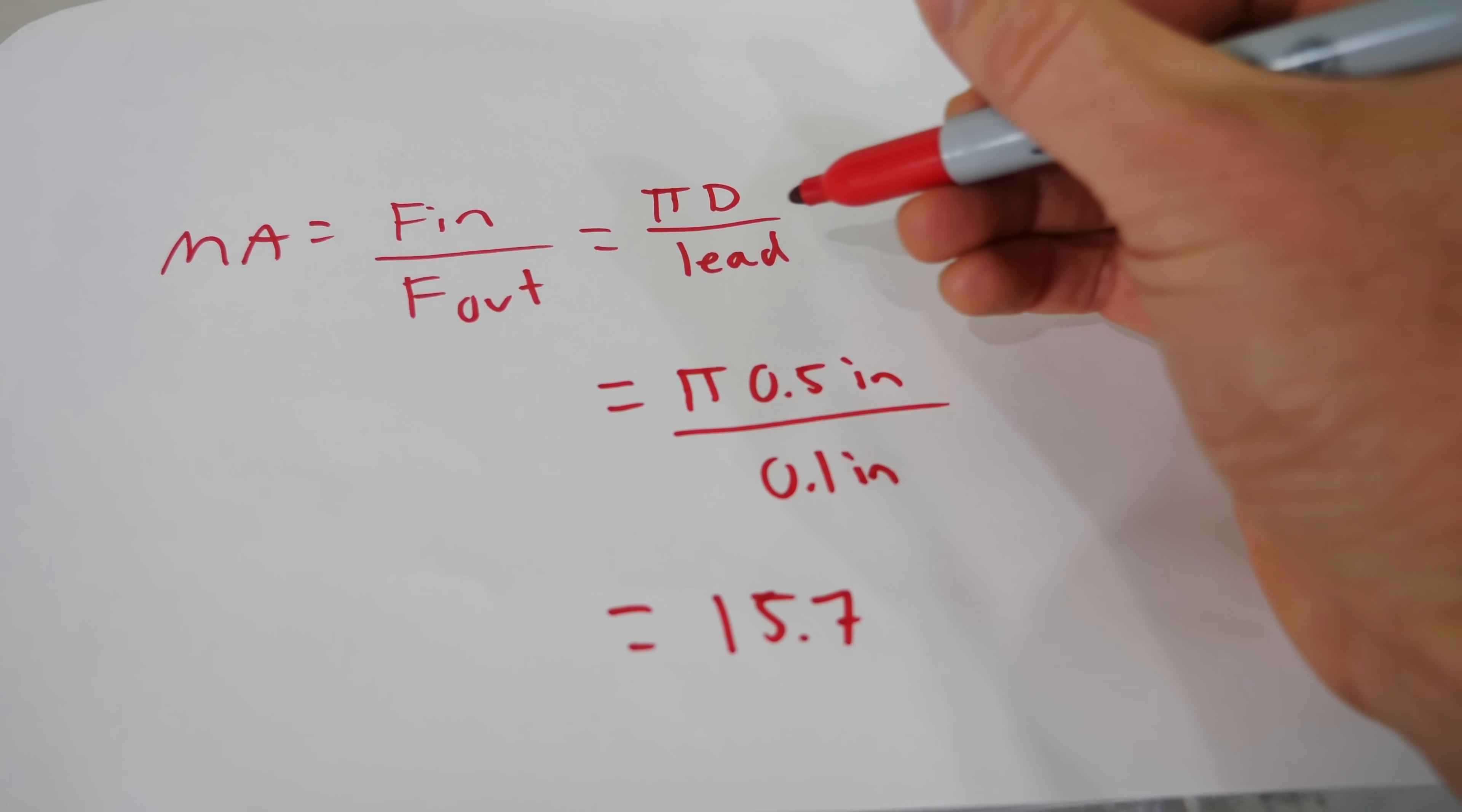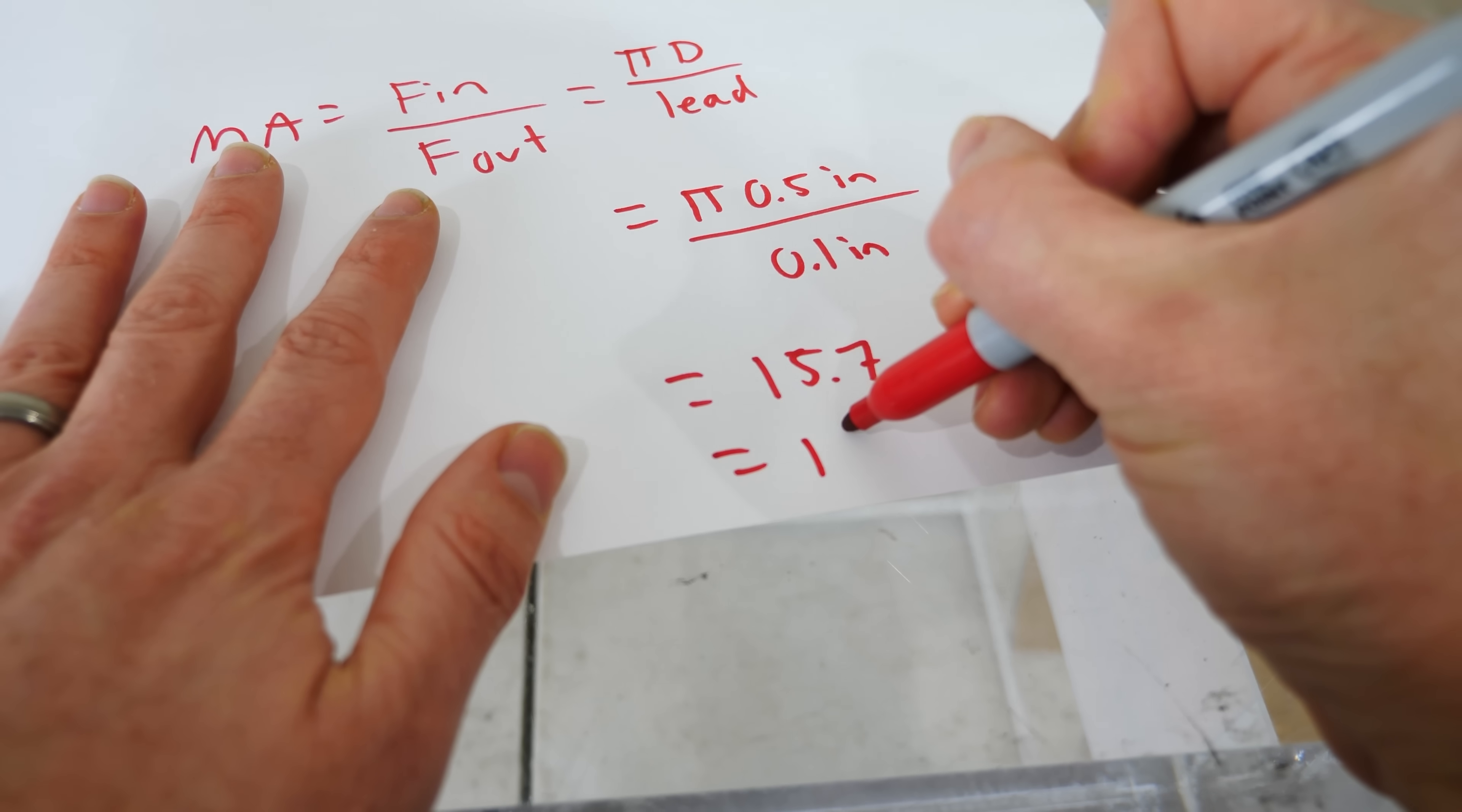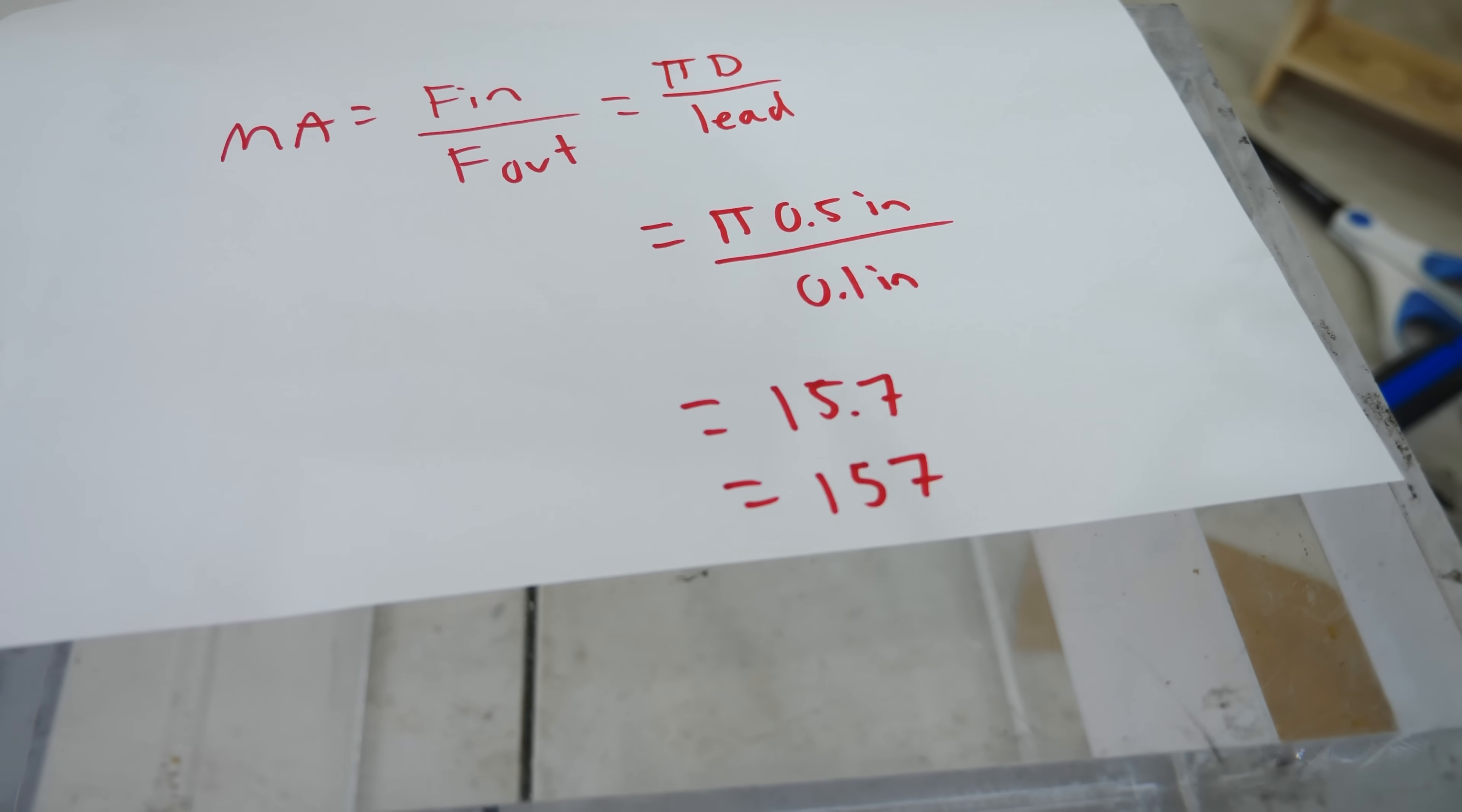But what's interesting, if I can make those leads even smaller, like let's say I made them 0.01 inches instead, then suddenly I get a mechanical advantage of 157, so 10 times the amount. So the smaller you can make this lead, the more mechanical advantage you get. So when you need to move things that are really heavy, that's why you have screws that have finer threads on them.